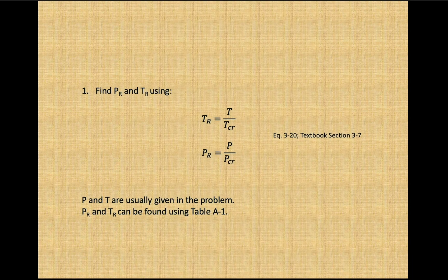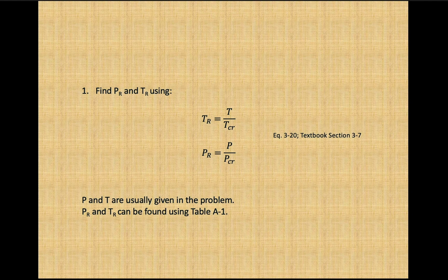The reduced pressure and reduced temperature values are used to normalize the pressure and temperature of a given gas with respect to their critical pressure and temperatures.